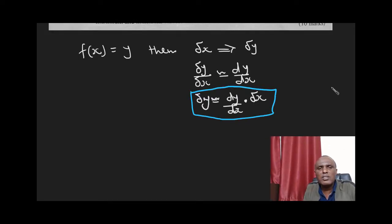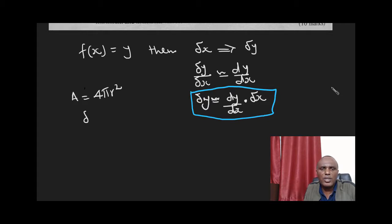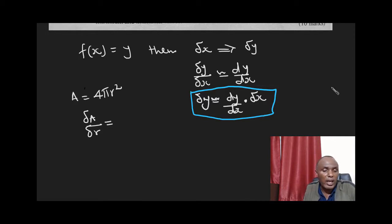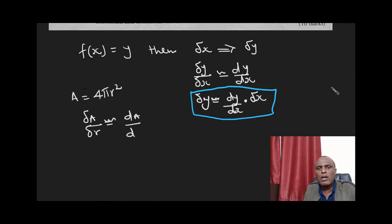In our problem, the radius is the variable affecting the surface area. We know that the surface area A is equal to 4πr², which is the surface area formula for a sphere. The small change in the surface area divided by the small change in the radius is approximately dA over dr.